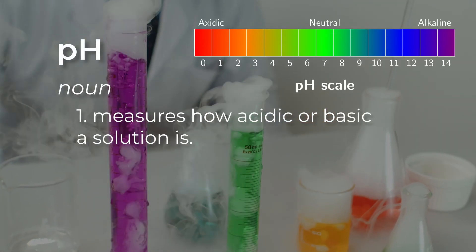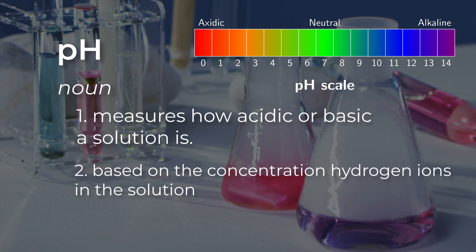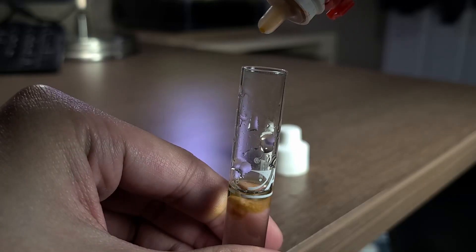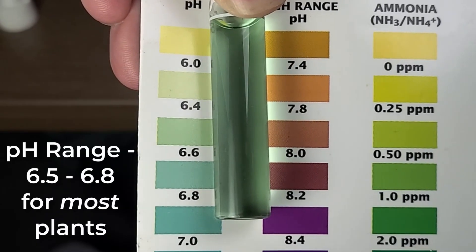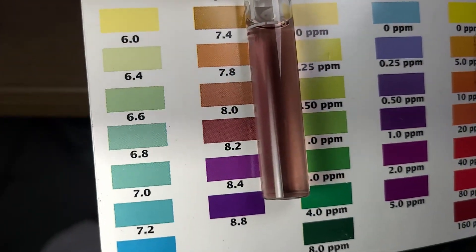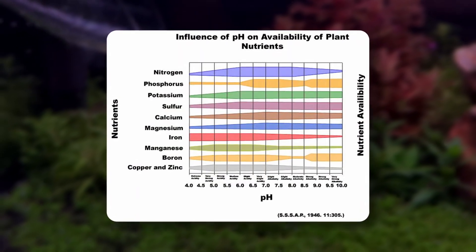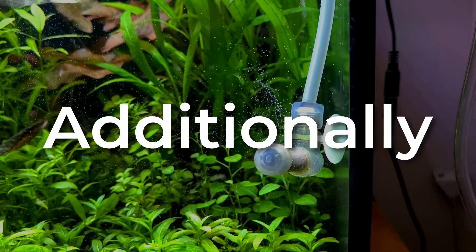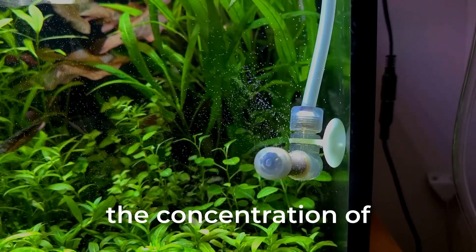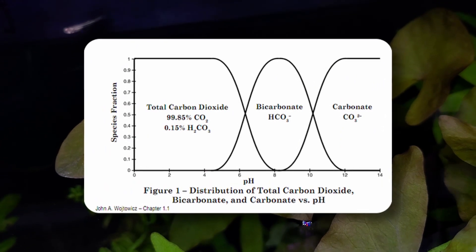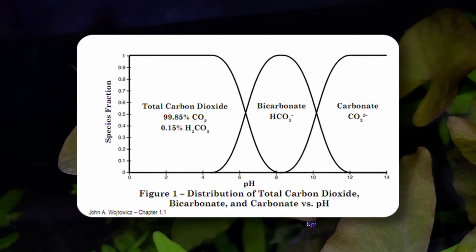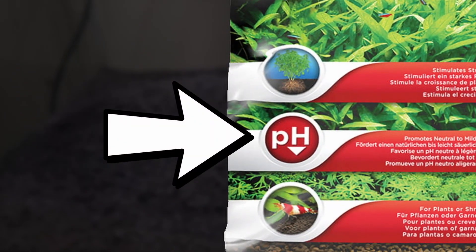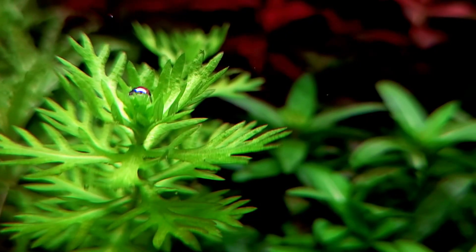pH measures how acidic or basic a solution is, based on the concentration of hydrogen ions in the solution. In general, a good pH range for most aquatic plants is between 6.5 and 6.8. If the pH is too high or too low, it can limit the availability of certain nutrients that plants need to grow, such as iron and manganese. Additionally, pH levels can affect the concentration of dissolved CO2 in the water, with low pH water having a higher concentration of dissolved CO2. This is one of the reasons why aqua soil lowers pH to around 6.5 — to create a favorable environment for plant growth.